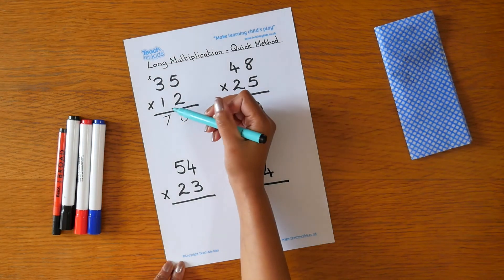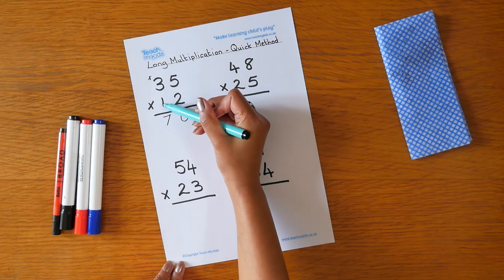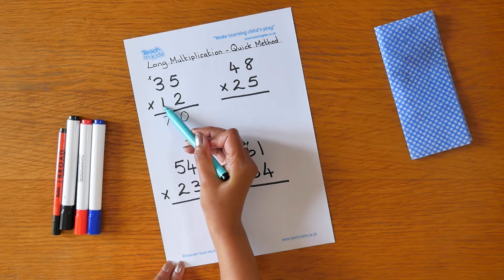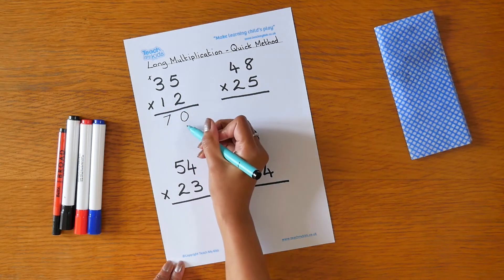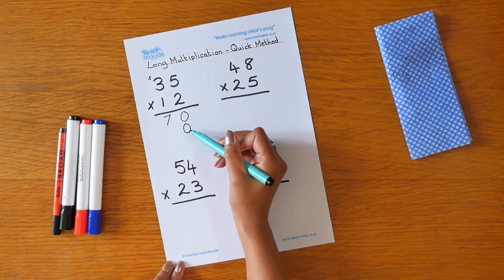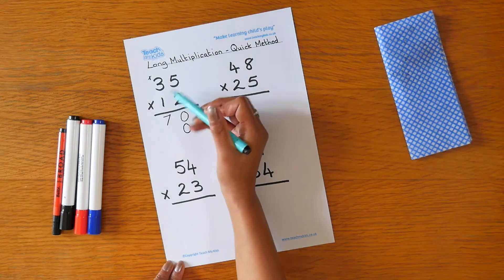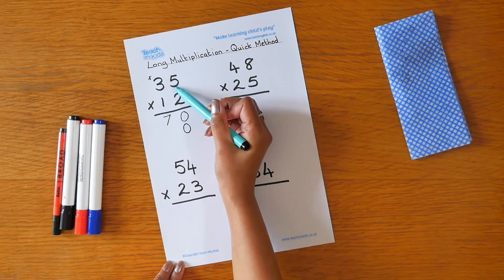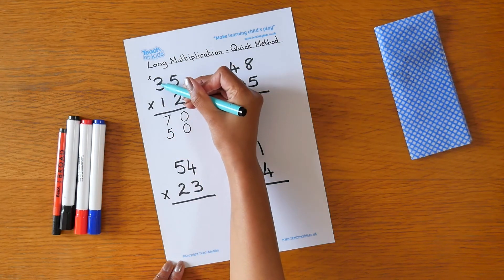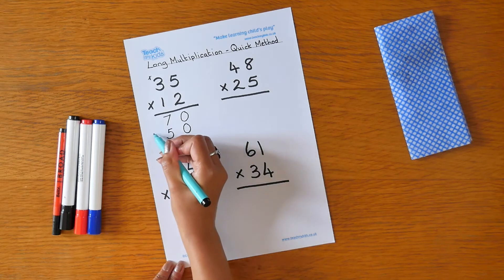We now need to multiply the 1. Now this 1 is really a 10, so to show that, we'll put a 0 in here first, because whenever we multiply a number by 10, the answer always ends in a 0. Now we can do 1 times 5 is 5, and 1 times 3 is 3. The 3 will go in the hundreds column.